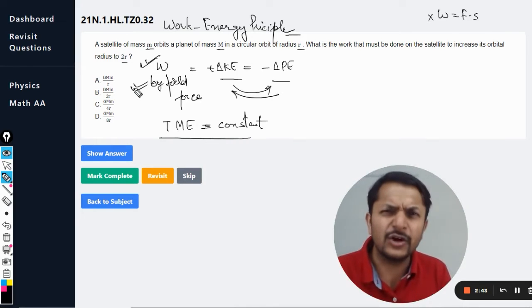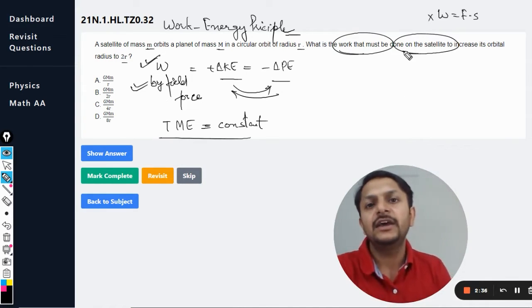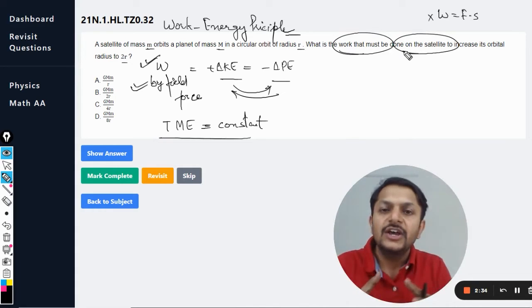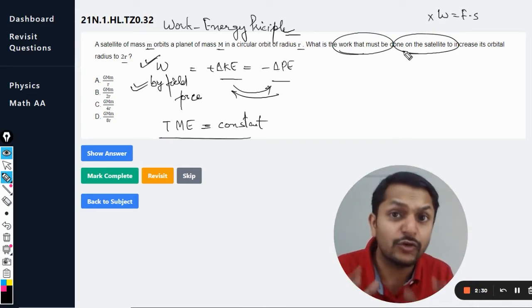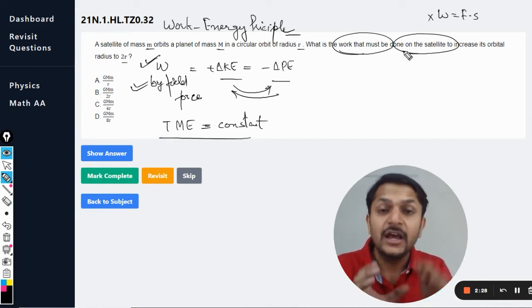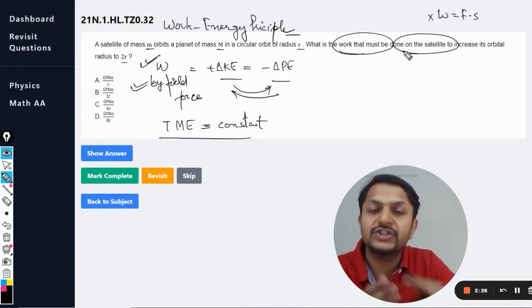Now in this case of satellite motion, the mechanical energy is not constant even though it is a conservative field. Why? Because we have done work on the satellite, we have given it more energy.